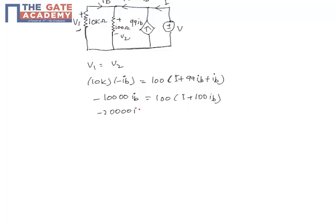So minus 20,000 Ib is equal to 100 into I. Now Ib will be equal to minus I divided by 200.